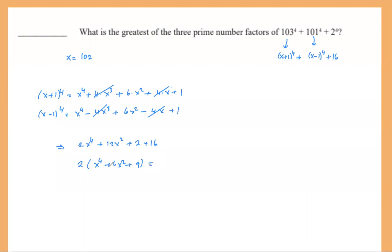If we pull out the 2, we get 2 times (x^4 + 6x^2 + 9), and we're lucky because this expression is a perfect square. We can write it as (x^2 + 3)^2 — since x^2 squared gives x^4, 3 squared gives 9, and double the product gives 6x^2. So the sum of those three numbers equals 2 times (x^2 + 3) times (x^2 + 3).